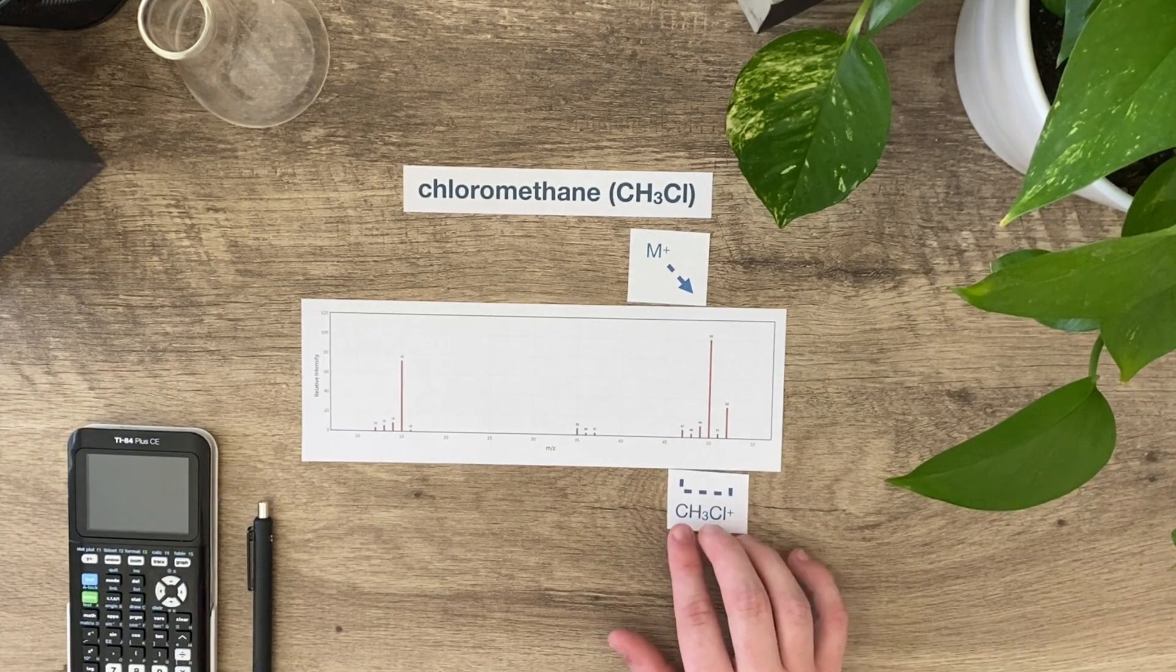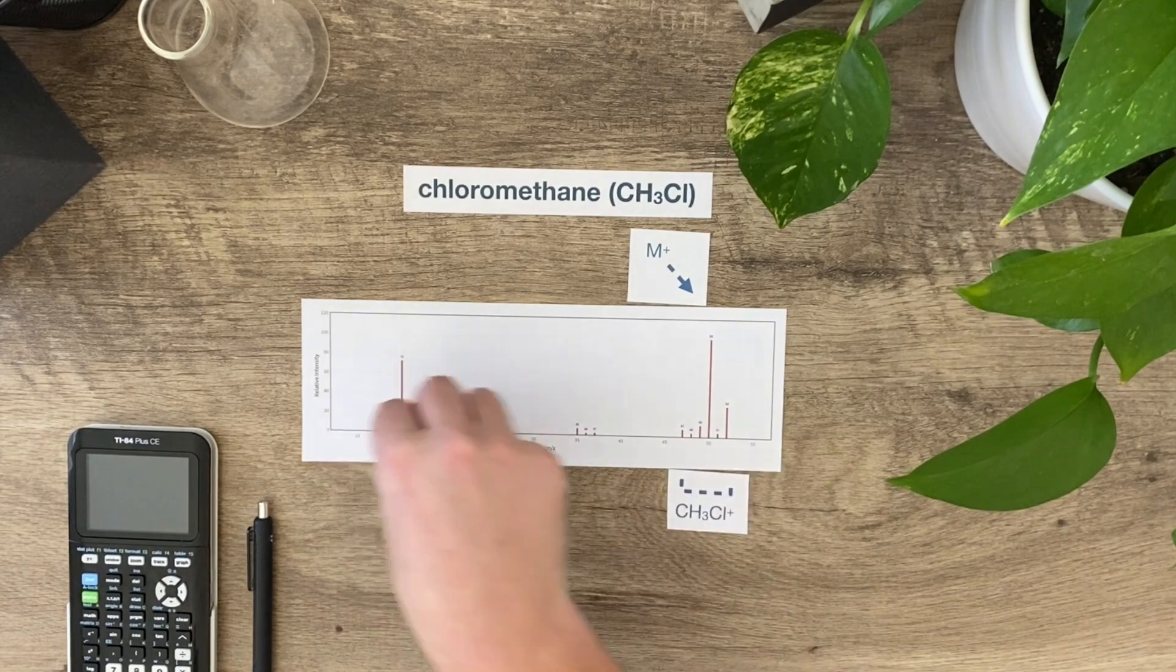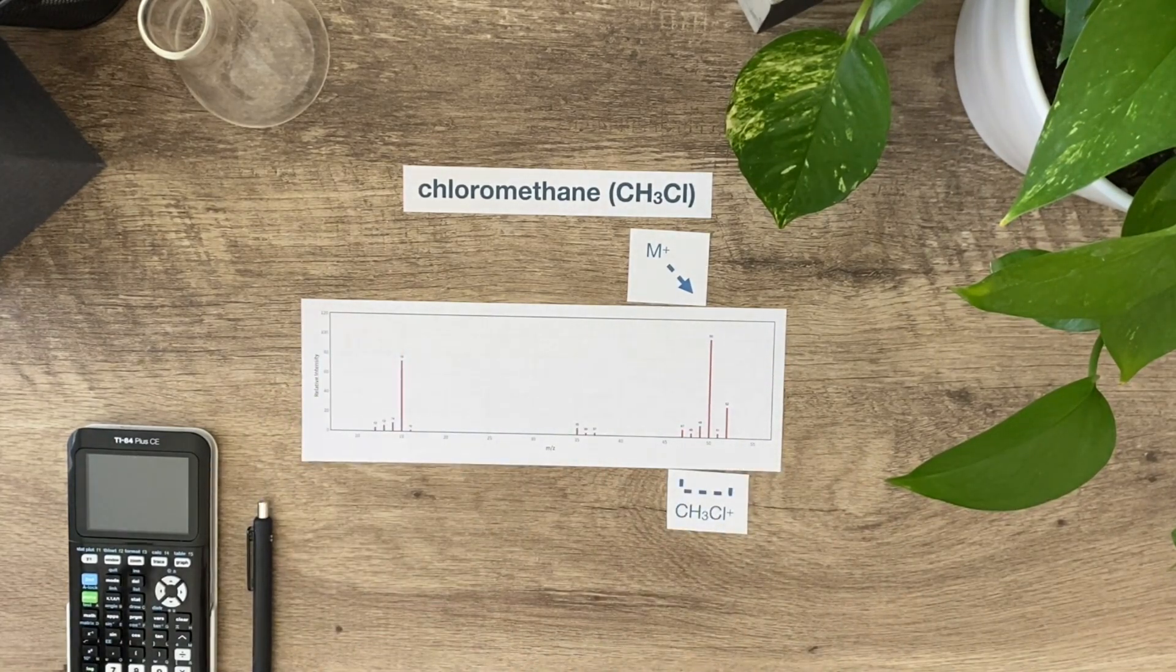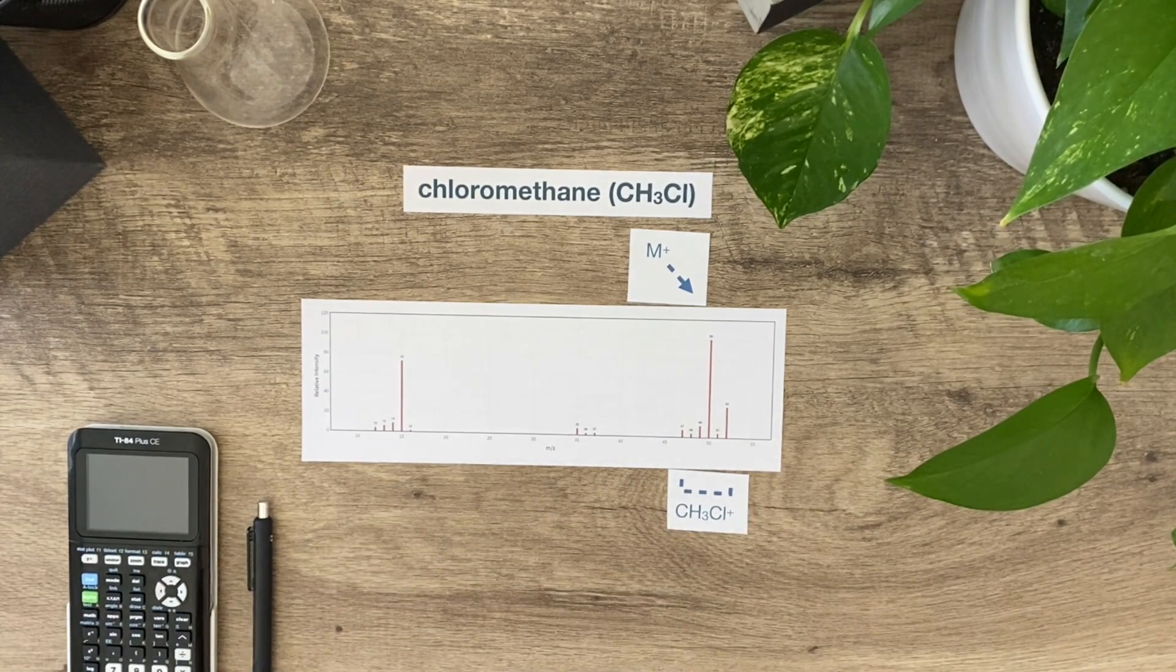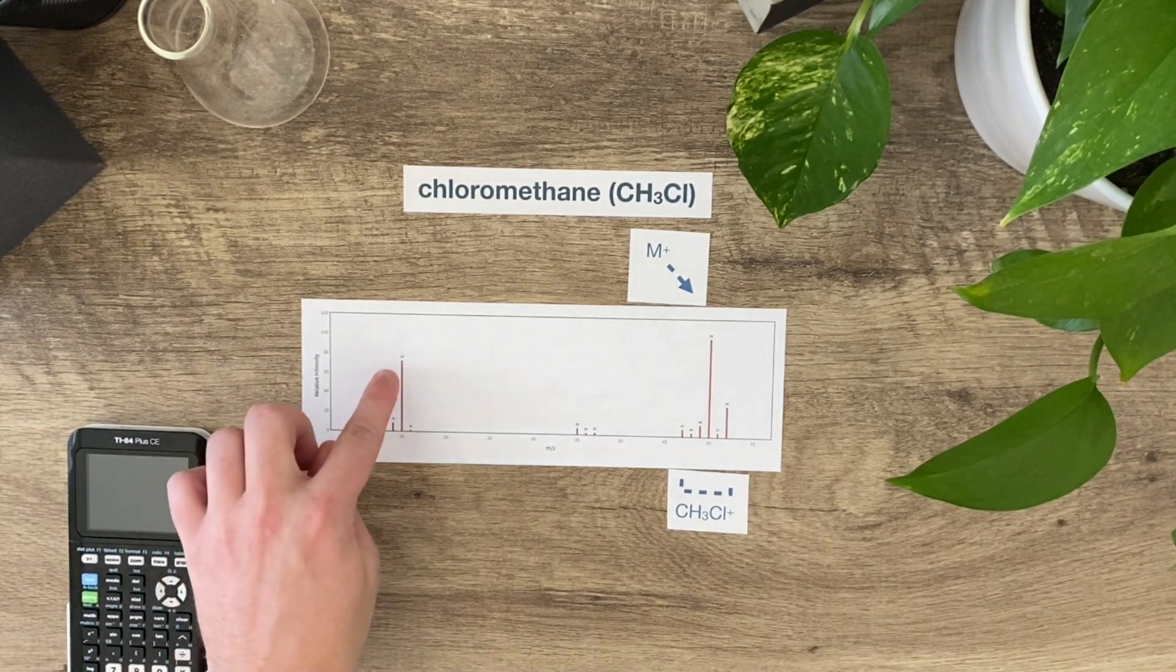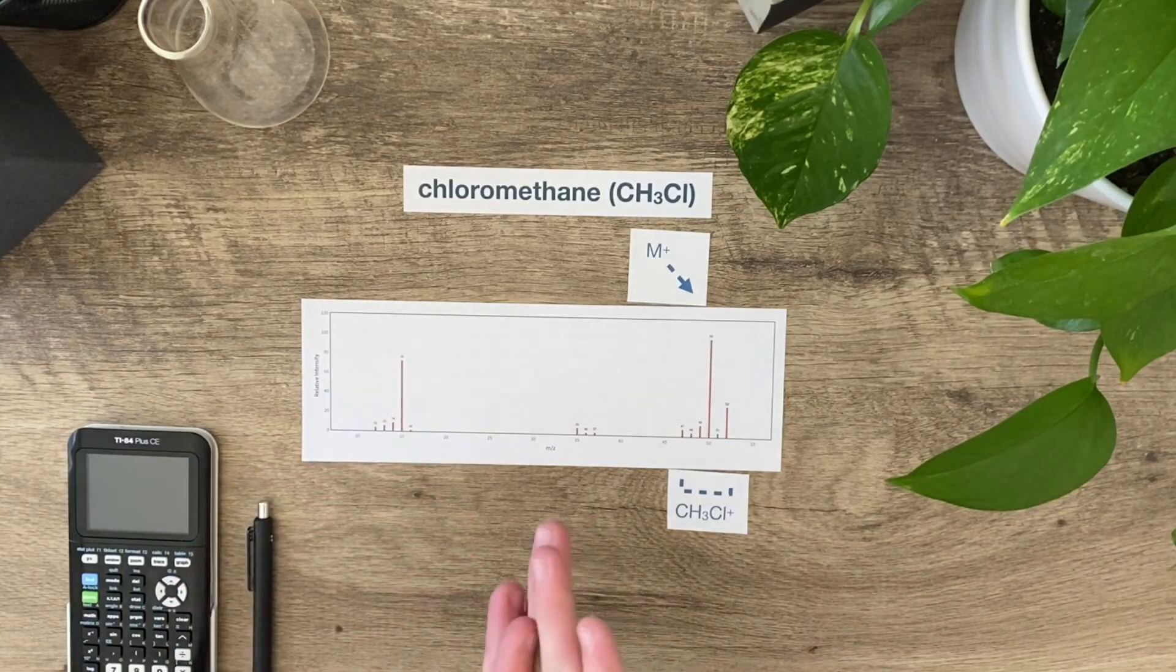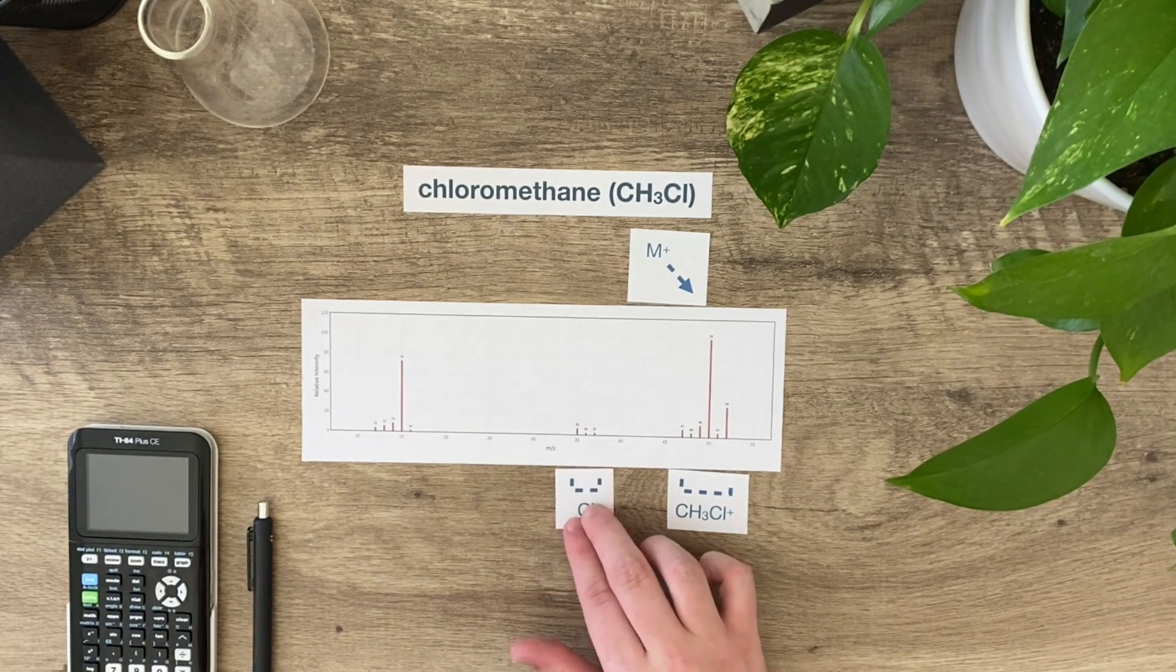CH3Cl+, so the ion stuck together. These two locations or concentrations are associated with something breaking off. This is 35. What do I think I can break off that would leave a mass of 35, and what can I break off to leave a mass of 15? Actually the CH3 and the Cl split, so this is representative of chlorine.